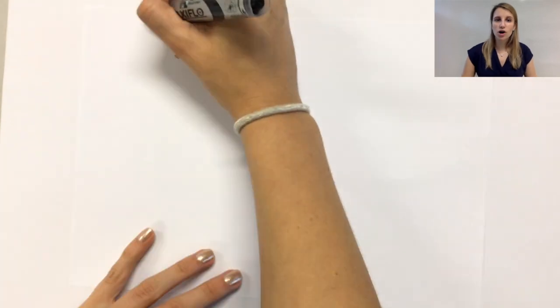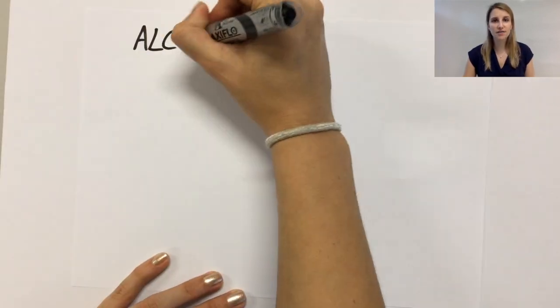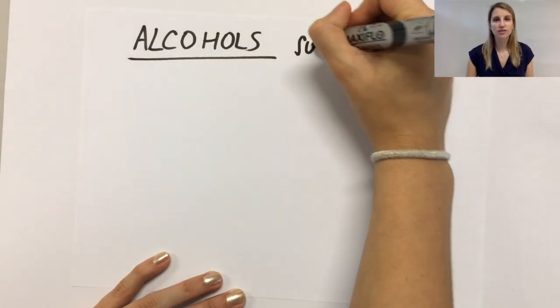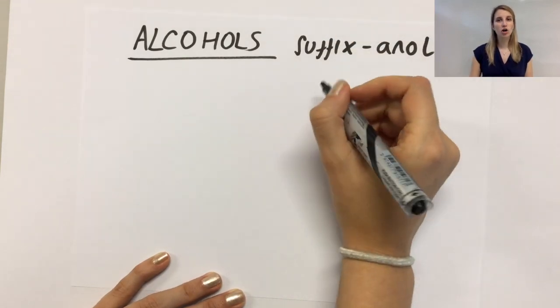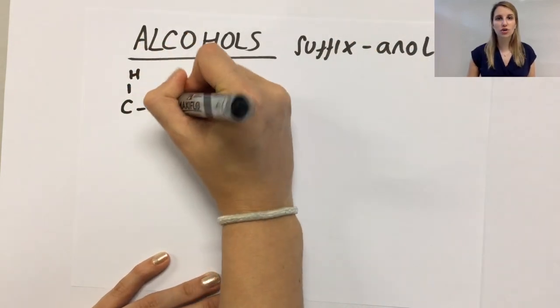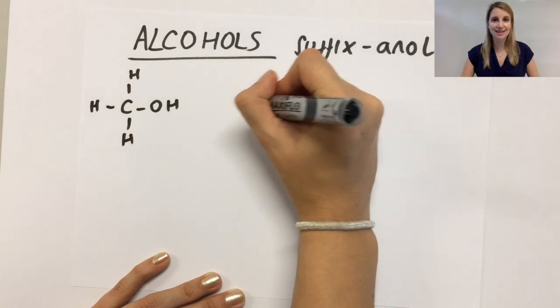The way that we know we've got an alcohol is that all of them have the suffix -anol. So if it ends in anol, you know you've got an alcohol group, which is an OH group.